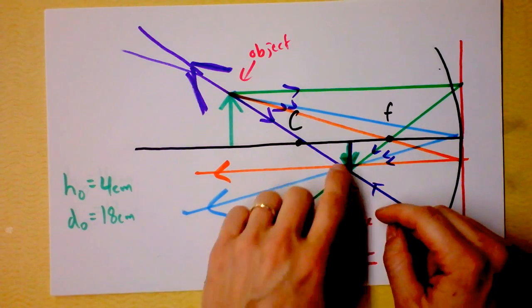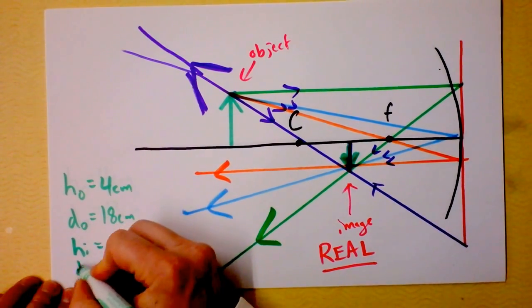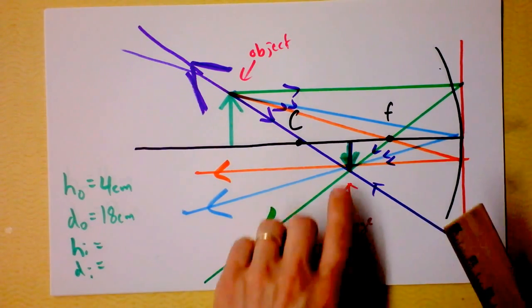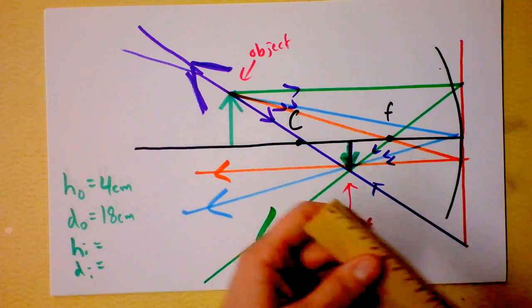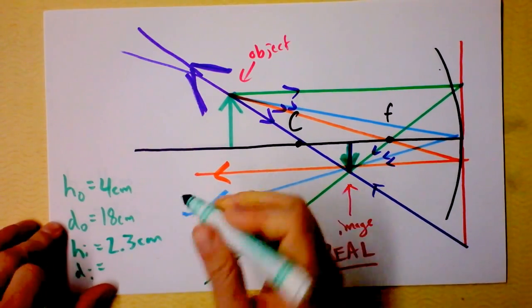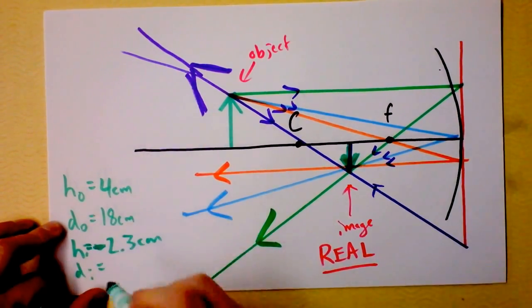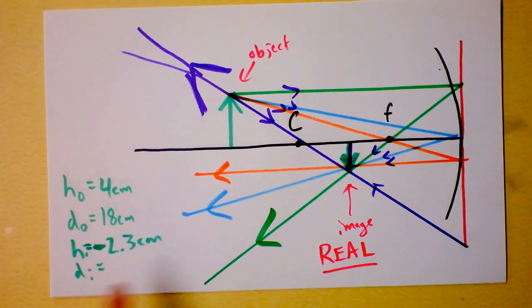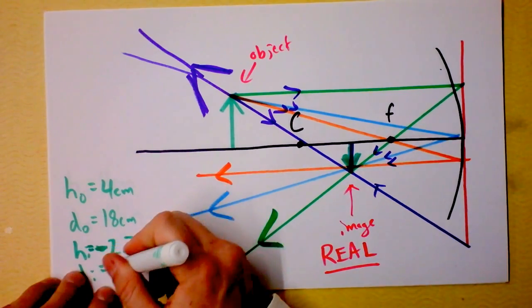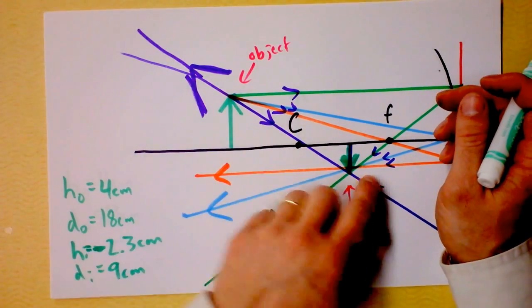If you've got a real image right here, you can ask: how tall is that image? The height of the image and the distance of the image from the mirror are both things you want to know. The height of the object was 4 centimeters, and it's 18 centimeters away from the mirror. We expect the height of the image to be a little bit less, and the distance from the mirror to be a little bit less also. I'm getting that the height of the image is negative 2.3 centimeters — negative because it's below the line.